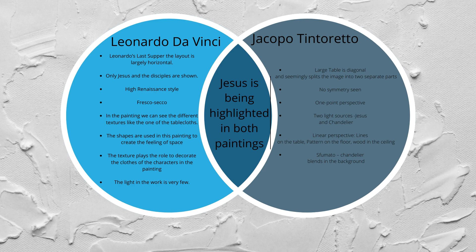On the left side of the Venn diagram are the details of Leonardo da Vinci's Last Supper. Leonardo's layout is largely horizontal. The large table is seen in the foreground with all the figures behind it. Only Jesus and the disciples are shown, and the scene depicted is the moment just after Jesus says that one of his disciples will betray him. Leonardo painted in the High Renaissance style and used Fresco Seco. The painting features different textures, with shadows and colors like blue, white, and gray used to create a sad and dark atmosphere. The artist was trying to create an environment where you could sense Jesus' divinity in a very holy atmosphere.